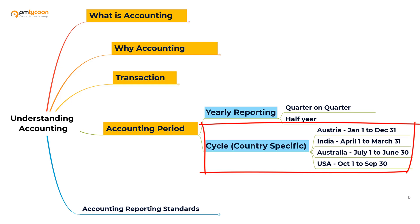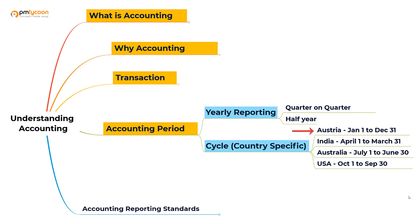Austria's accounting period starts from January 1st and ends on December 31st. India's accounting period starts from April 1st and ends on March 31st. Australia's runs from July 1st to June 30th, and in the US the accounting period starts from October 1st and ends on September 30th.